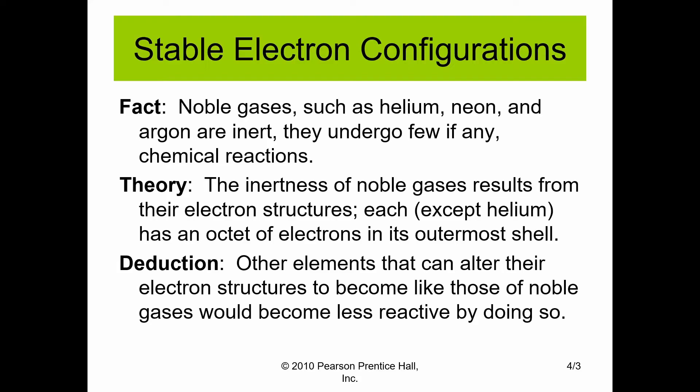This stems a theory. The inertness of these noble gases, their unwillingness to react with other species, results from their electronic structure. Each of these gases, except for helium, has an octet of electrons in its outermost shell — that means it has 8 valence electrons in its outermost shell. From this, we can deduce that other elements can alter their electronic structure to become more like the noble gases and become less reactive by doing so.